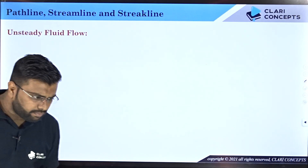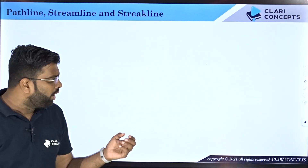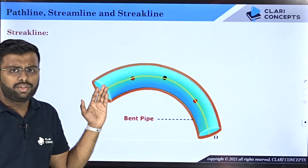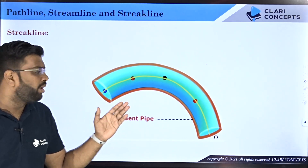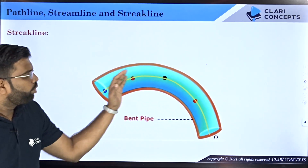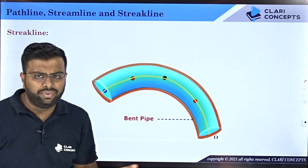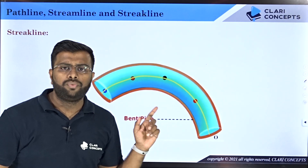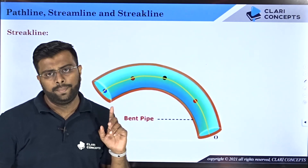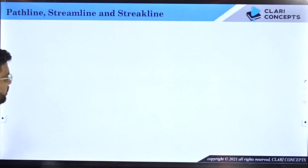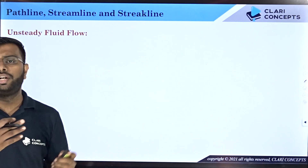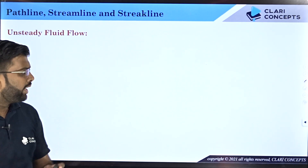Now the question is: in all the cases we have seen, the pathline, streakline, and streamline were all the same. So how are they different? These were the same because the flow was steady. These lines will become different for an unsteady flow. Let us see what is unsteady flow.